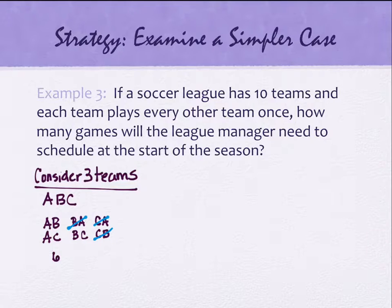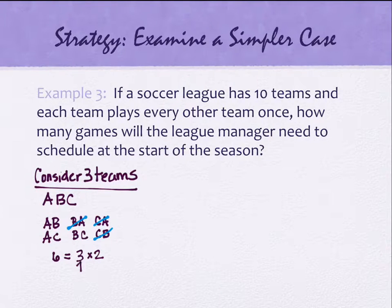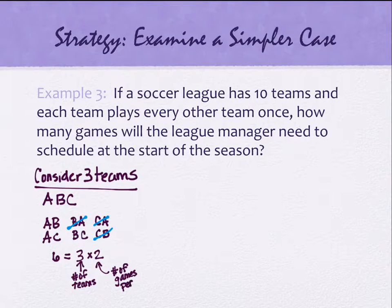But think about why the answer looked like six before we crossed things out. How do you get six when you start with three teams? If you have three teams each playing the other two teams, that's three times two. So every team, and there are three of them, plays two games. Six is achieved because we did three times two: three is the number of teams, and two is the number of games per team.